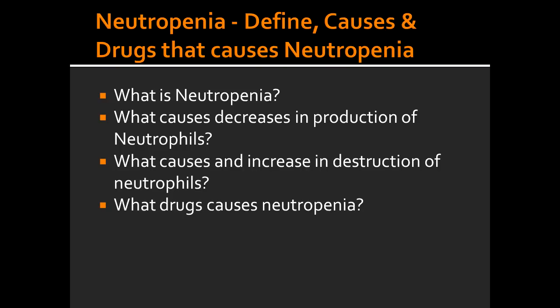Name some of the drug-induced reasons why you would get neutropenia. Some of the drug-induced reasons that would lead to neutropenia are with the use of alkylating agents, chloramphenicol, chlorpromazine, sulfonamides, and phenylbutazone.